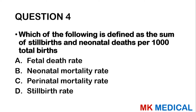Question 4: Which of the following is defined as the sum of stillbirths and neonatal deaths per 1,000 total births? A — fetal death rate. B — neonatal mortality rate. C — perinatal mortality rate. D — stillbirth rate. Since it includes both stillbirths and neonatal deaths, it rules out B and D. Fetal death rate refers to babies already dead at birth. What's defined here is the perinatal mortality rate. The answer is C.